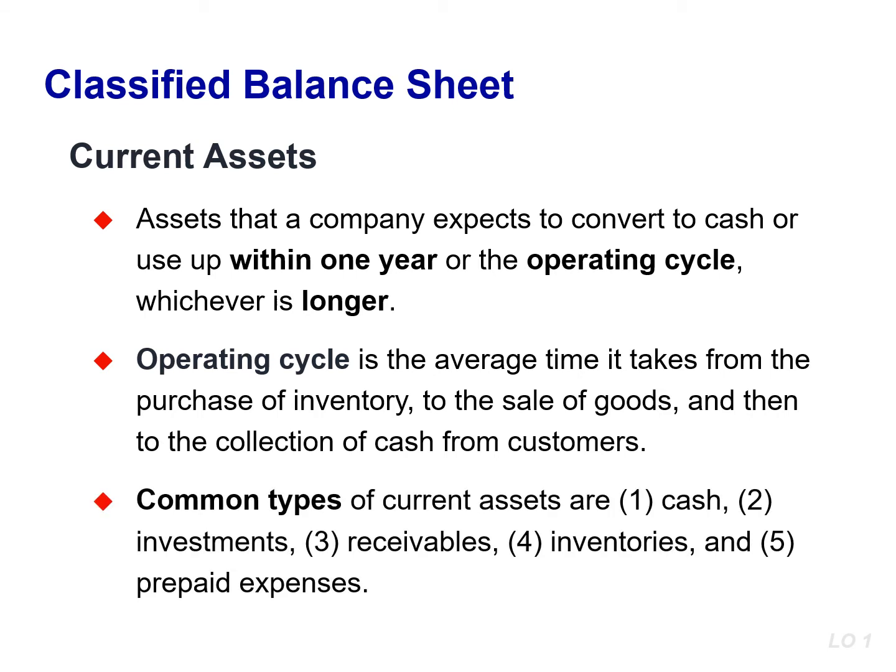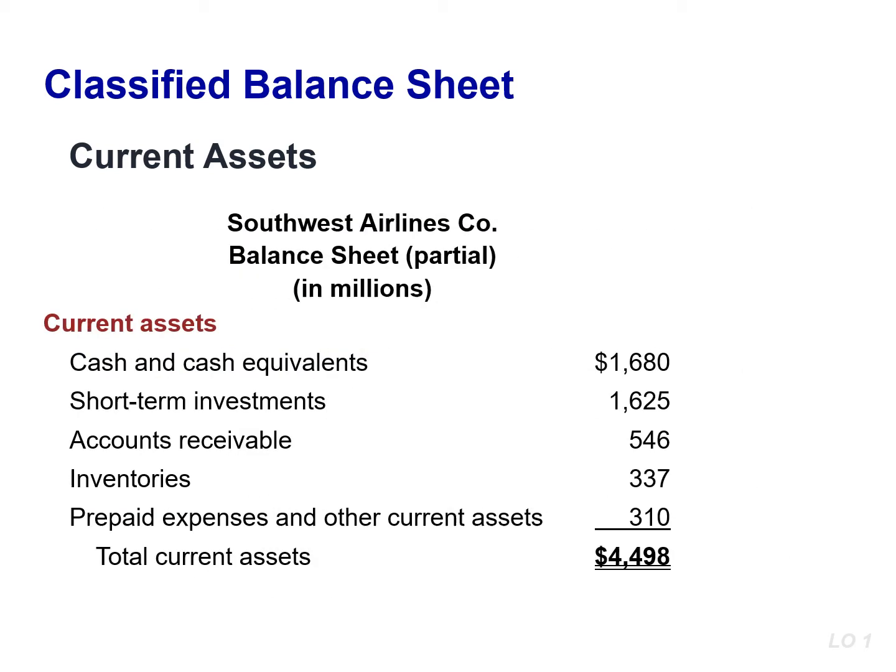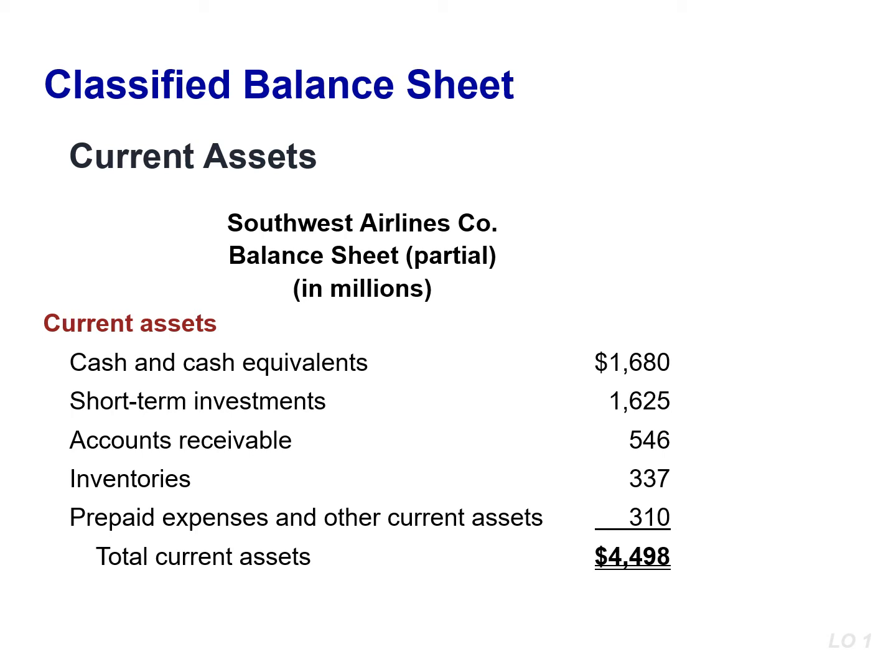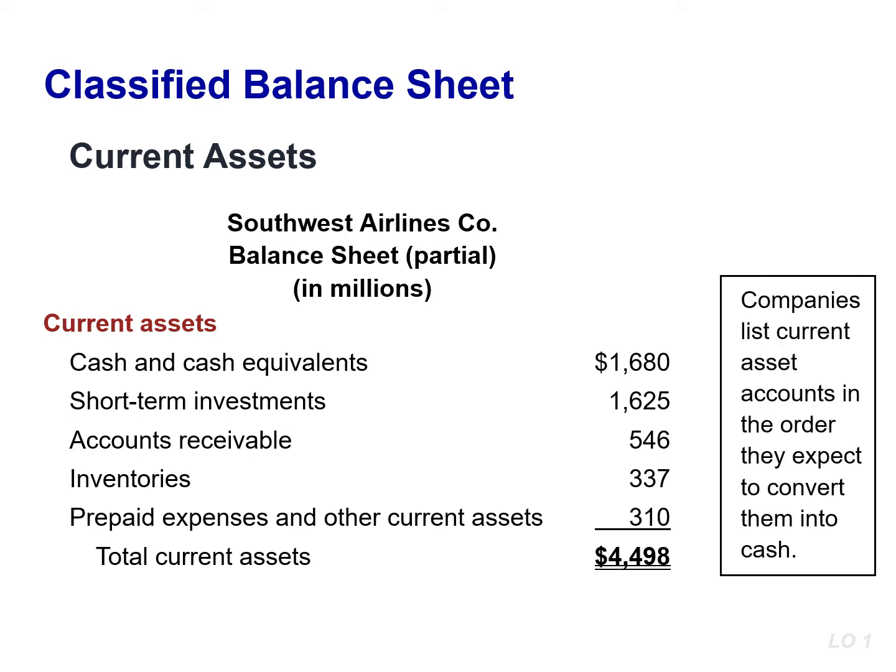Common types of current assets are cash, short-term investments, receivables such as accounts, notes, and interest receivable, inventories, and lastly prepaid expenses such as insurance and supplies. Companies list current assets in the order in which they expect to convert them into cash. Follow this rule when doing your homework. When filling in the current assets section of a balance sheet, list cash first, then short-term investments, followed by accounts receivable, then inventories, and then prepaid expenses.